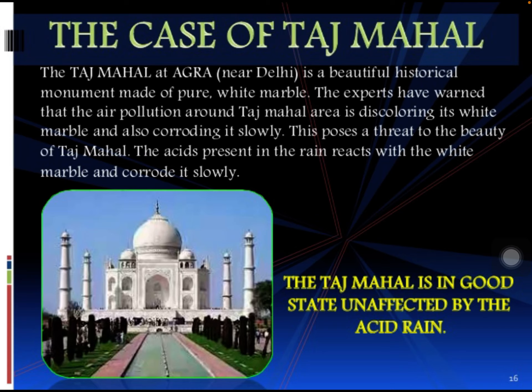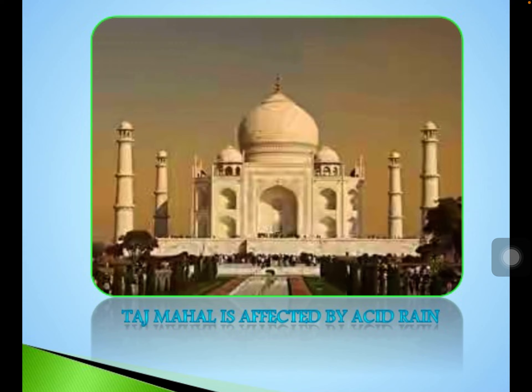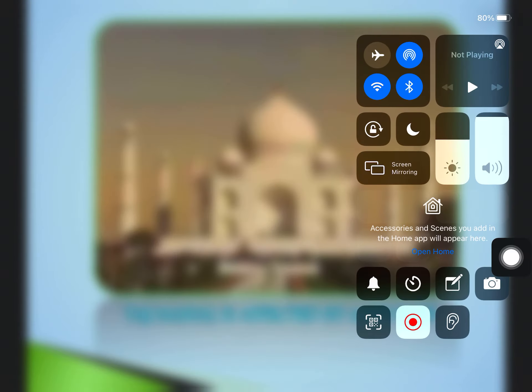The acid present in acid rain reacts with the white marble and corrodes it slowly. As you can see in the picture, the Taj Mahal, which was once pure white, has become yellowish in color due to acid rain. This color change in the white marble is a direct result of acid rain. That's all for today's class on air pollution; next class we will study water pollution.